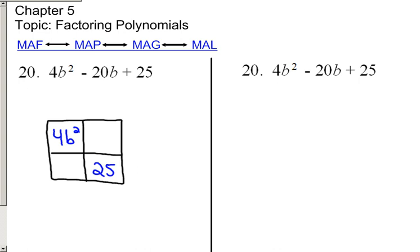The other two boxes will be filled in once you complete MAF. The M you get by multiplying the first and the last coefficient. Four times 25 is 100. The A is the middle coefficient, negative 20. The F stands for the two factors that multiply to 100 and add to negative 20. Those two factors are negative 10. Those are the two numbers that go into the other two boxes.